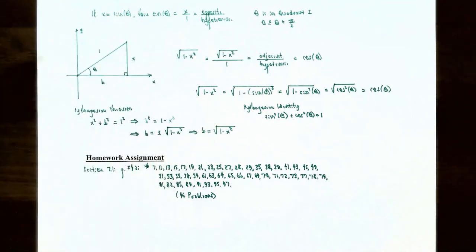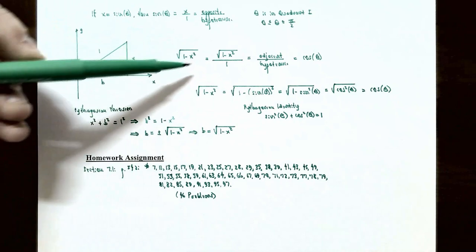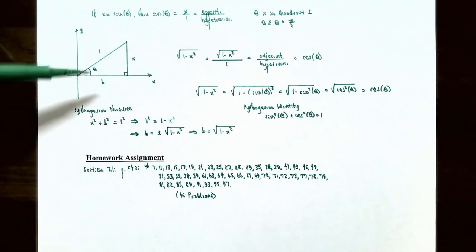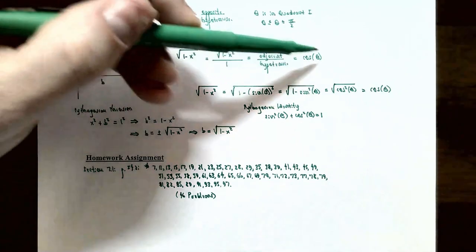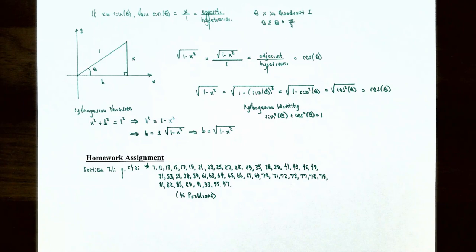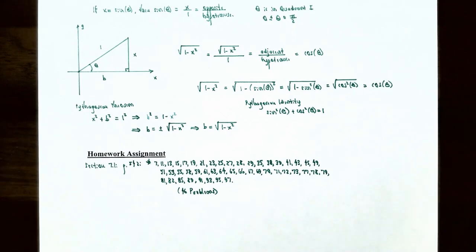This finishes our video on trigonometric identities. We covered how to verify fundamental trigonometric identities and simplify trigonometric expressions using algebra and the identities. If you have any questions about any examples in this video, or questions while working on the homework, please let me know. I'll see you in the next video when we talk about the addition and subtraction formulas.